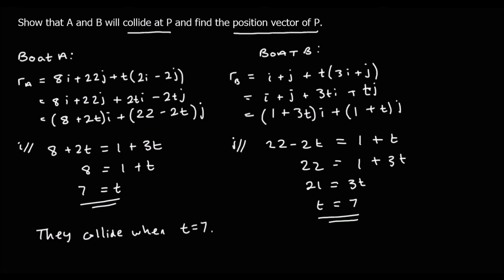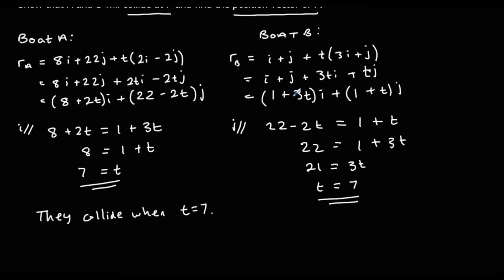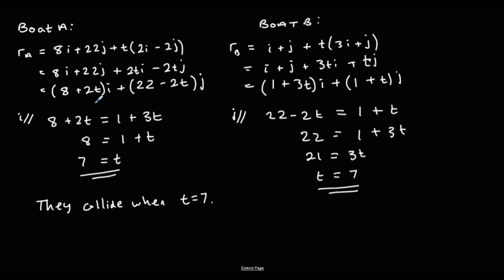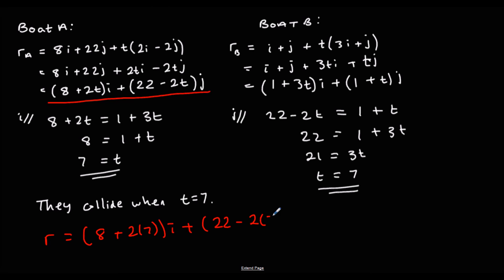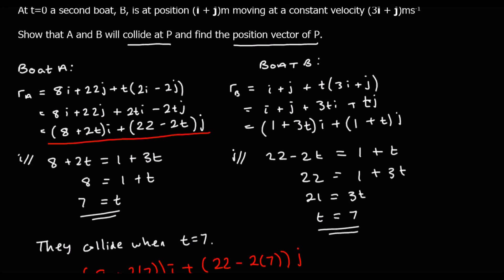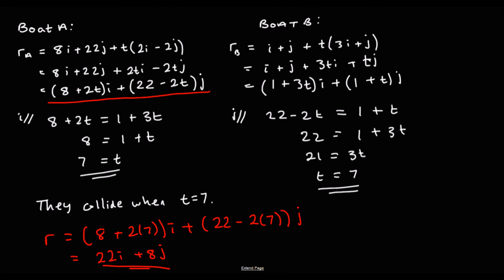What is the position when t = 7? We can use either A or B. Using boat A: the i-component is 8 + 2×7 = 22i, and the j-component is 22 − 2×7 = 8j. We could put t = 7 into boat B as well and it should give the same answer. So they collide when t = 7, and the position is 22i plus 8j.